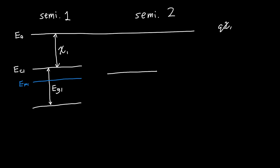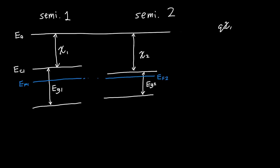Now let's look at semiconductor two. This one has some electron affinity, and let's say it's different from the first one. It also has some band gap — let's say that band gap is also different, and let's say it's smaller. This semiconductor is also going to have some Fermi level. Let's initially put it at the same exact place as the Fermi level of the first structure, so their Fermi levels are constant. Clearly this won't be true in general, but this lets us figure out piece by piece how to draw the band structure.